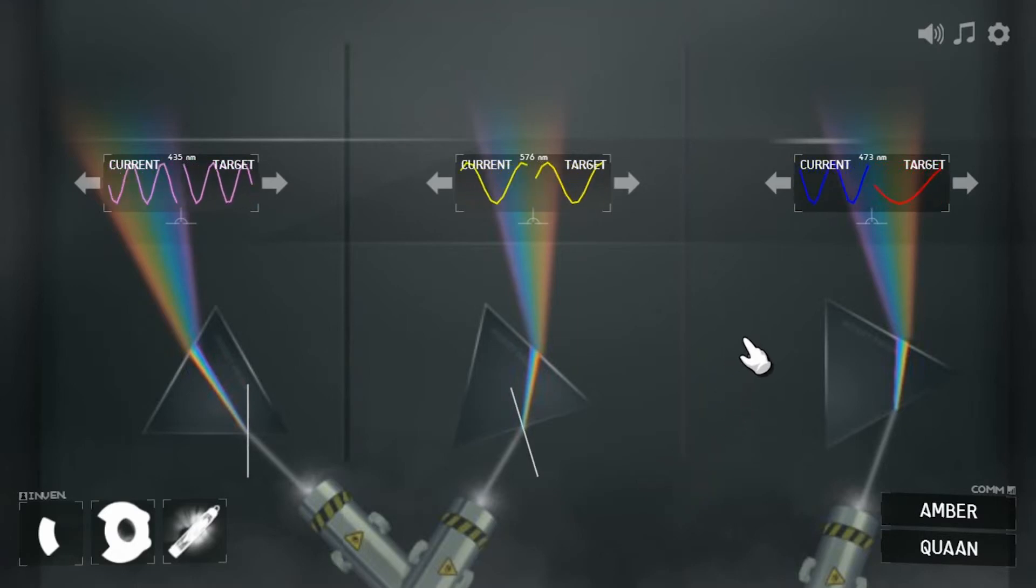These lines are called the normal. They're just what a beam of light would do if it was hitting glass straight on. It wouldn't bend at all. Now see how the light bends towards the normal line when it goes into the glass prism? Light always bends towards the normal when it slows down.